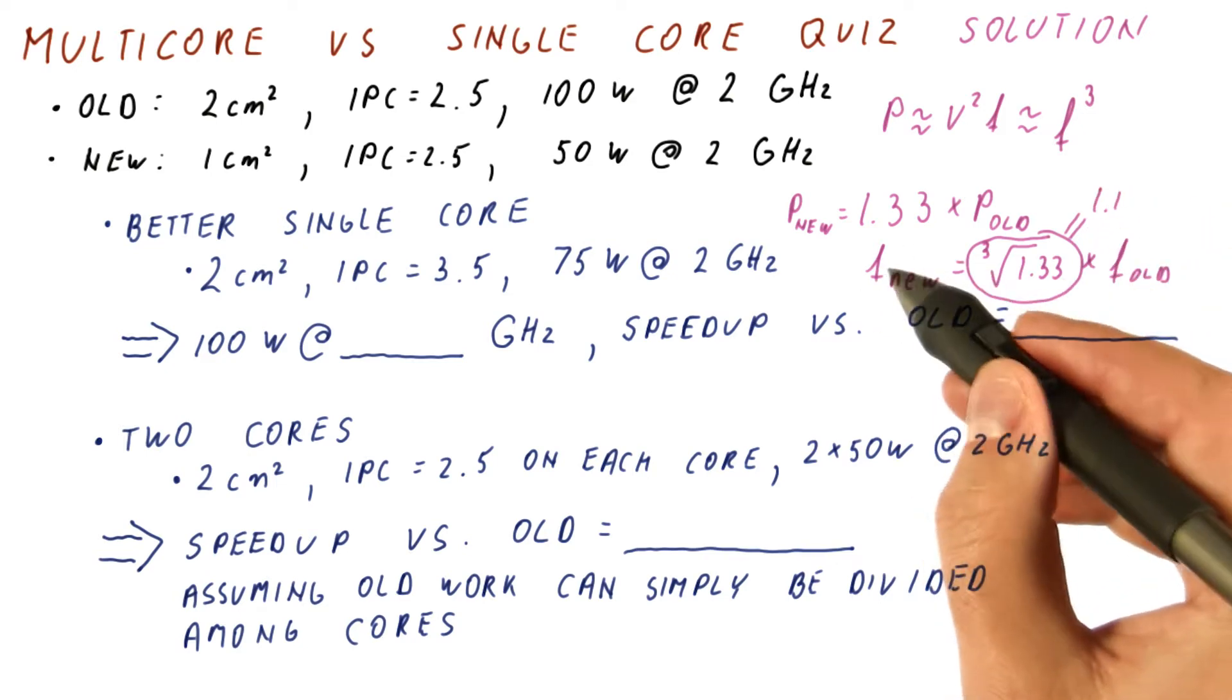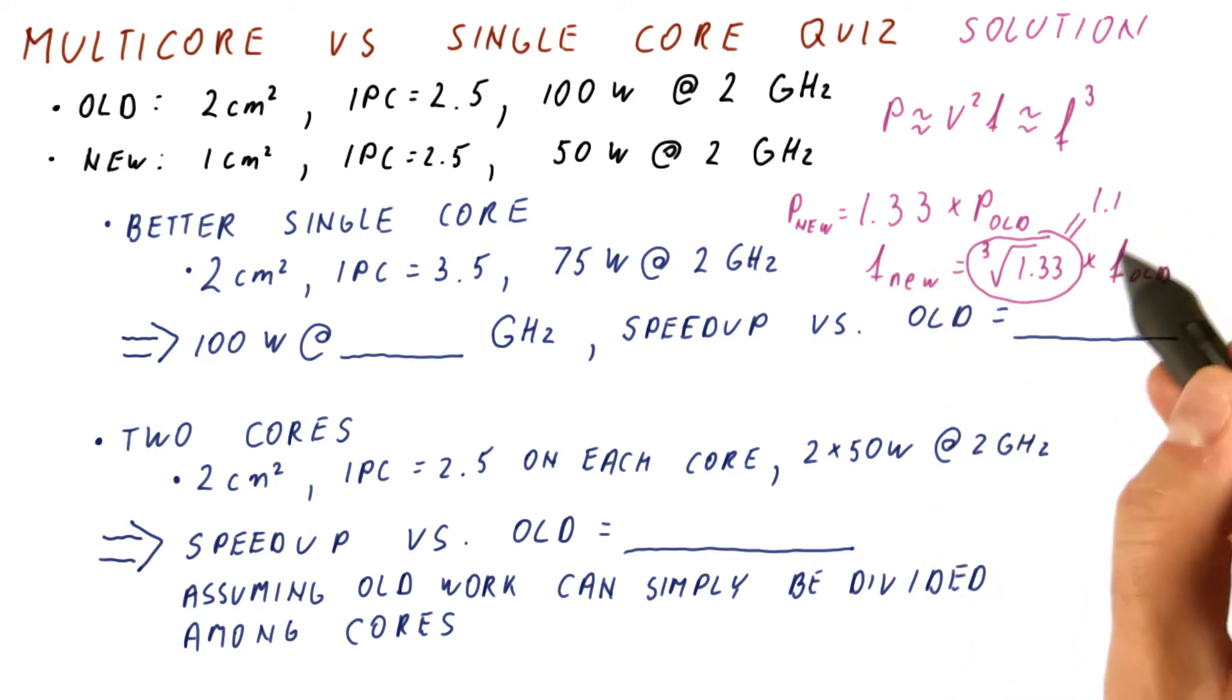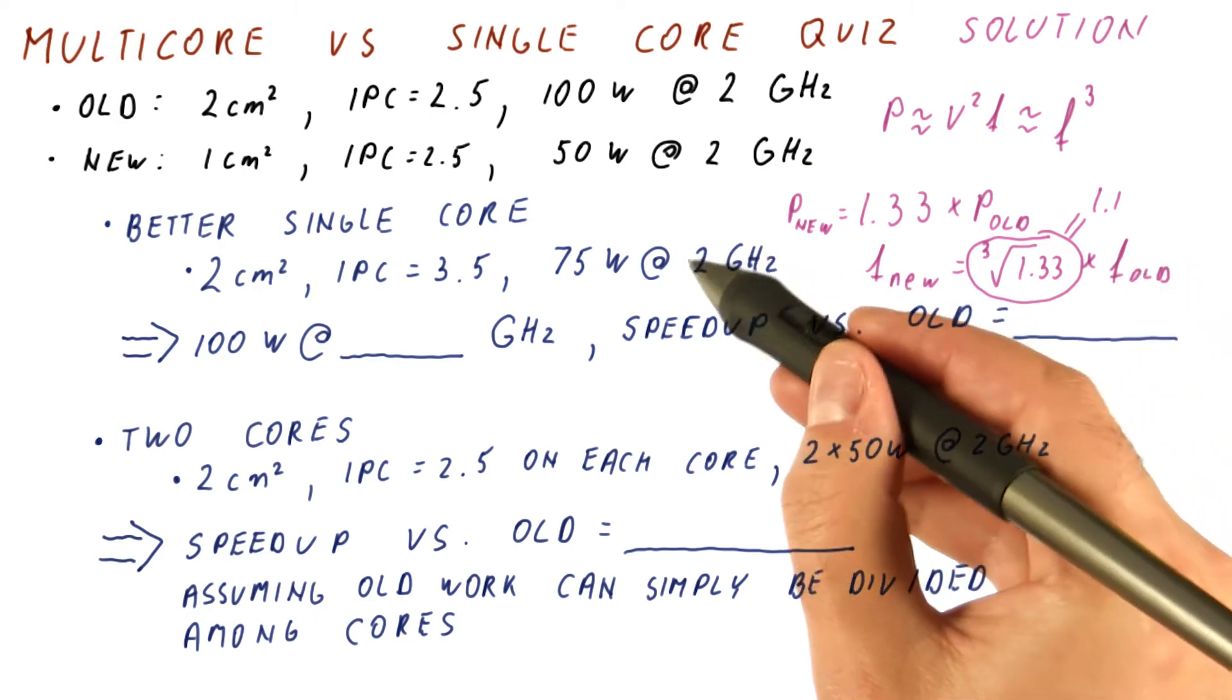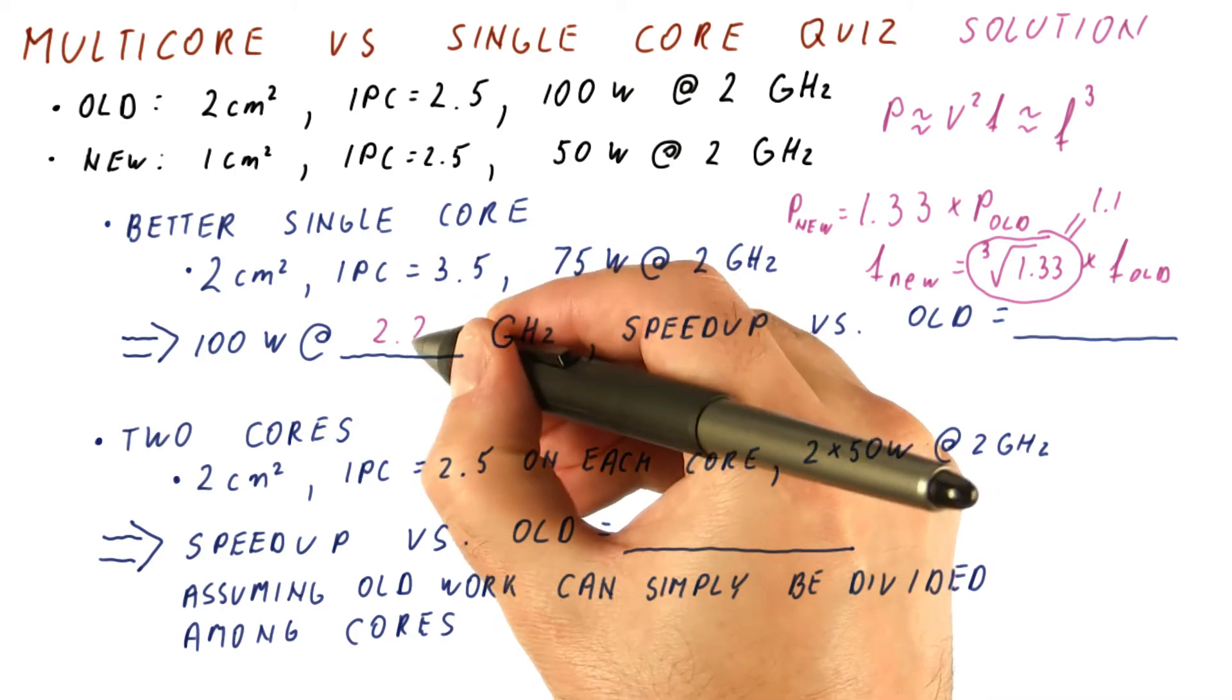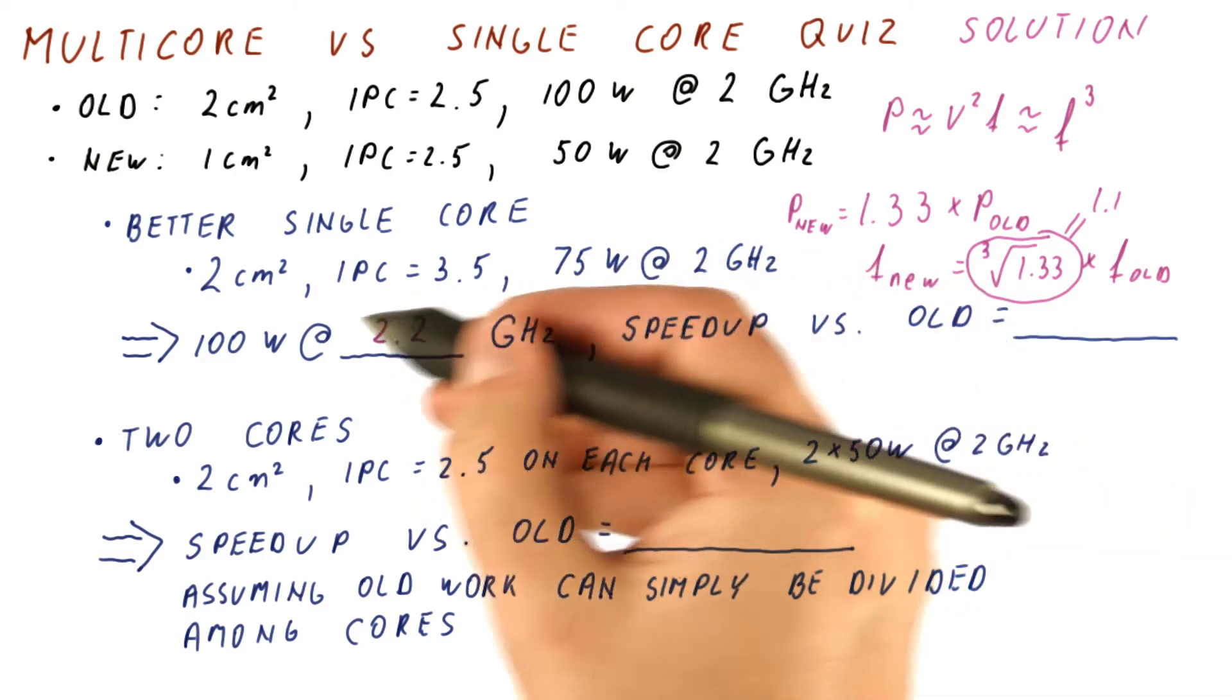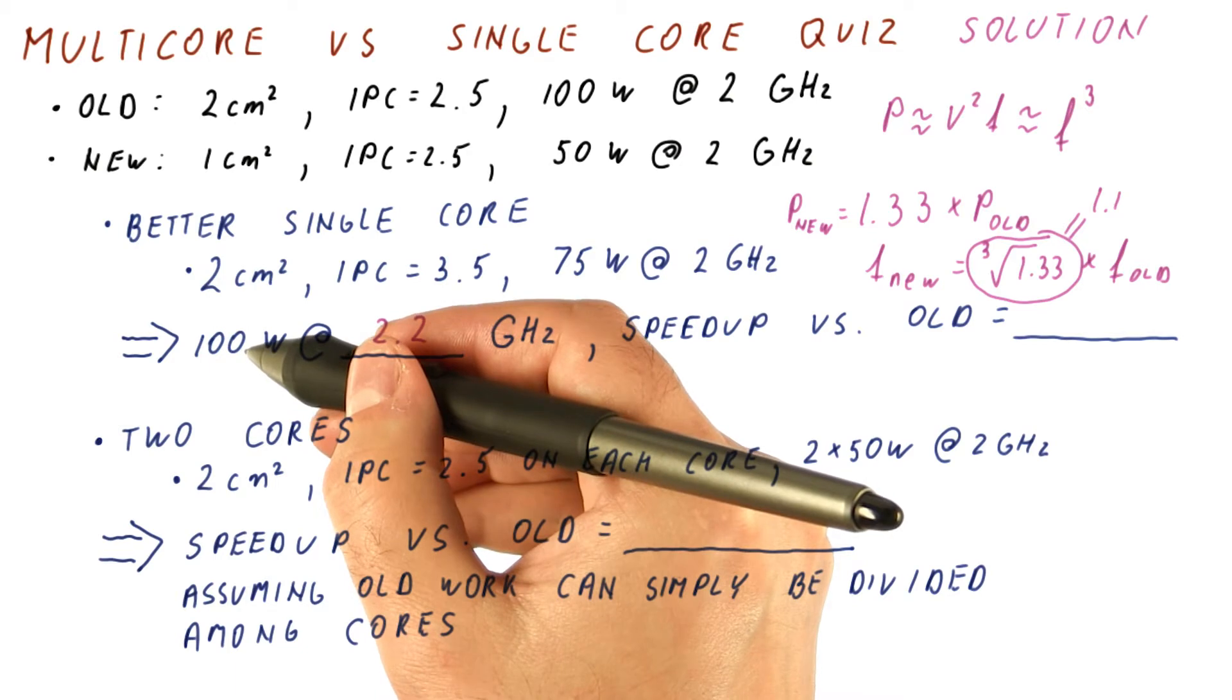So our new frequency is 1.1 times the old frequency. The old frequency was 2 gigahertz. That means we can achieve 2.2 gigahertz when we increase the power by a factor of 1.33.